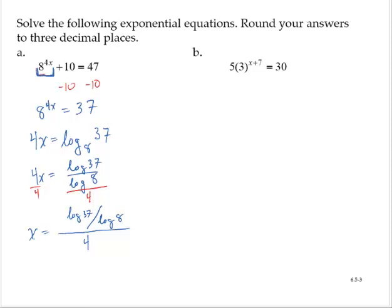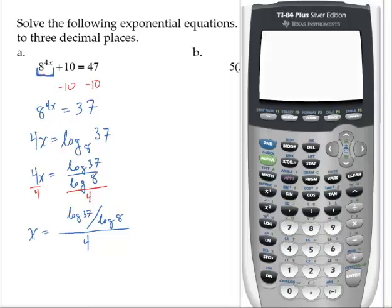Now on the calculator, we have to be careful how we input that. So I'll open a quantity log 37. Notice when you type in that log, it opens another quantity. So let's close that logarithm, divide by log 8, close that logarithm.